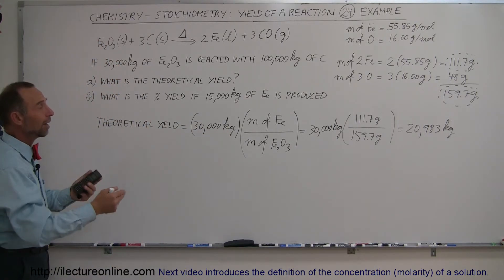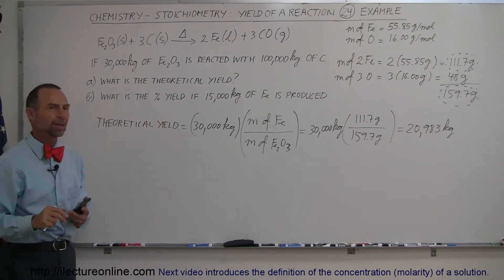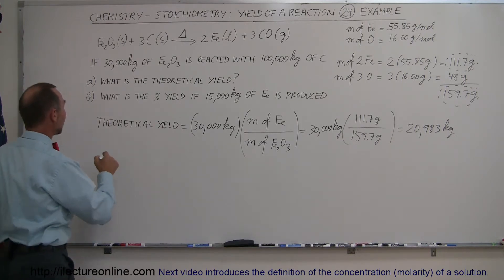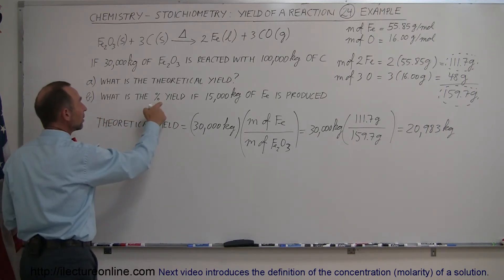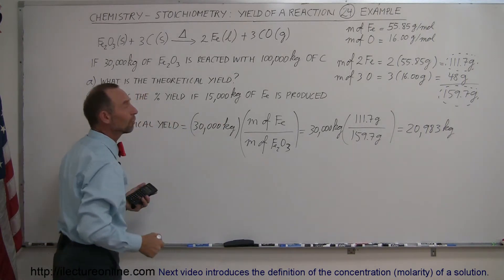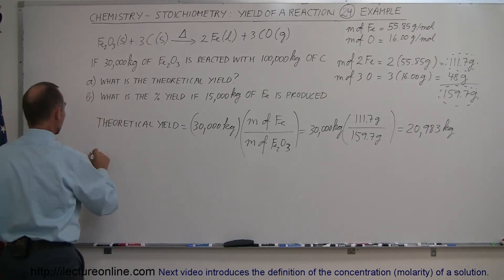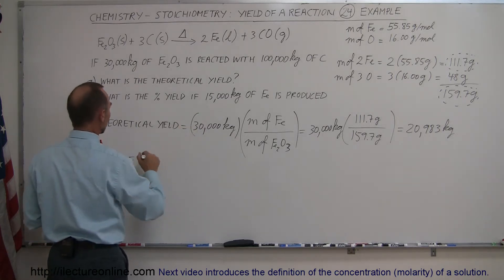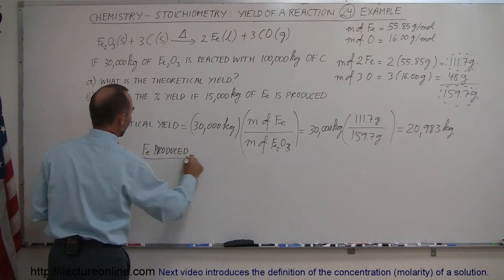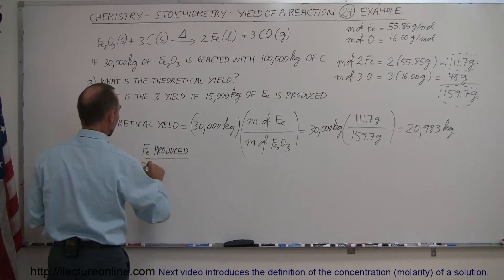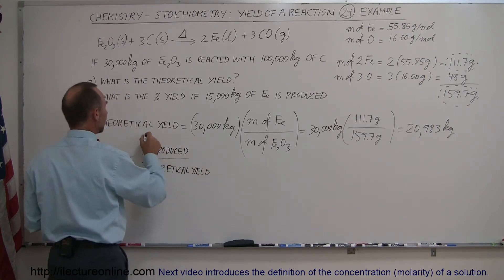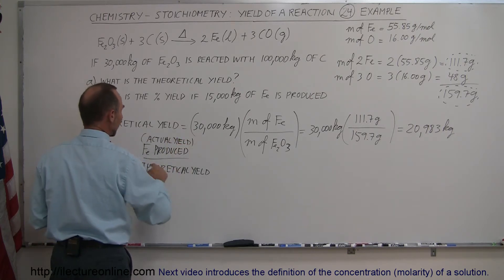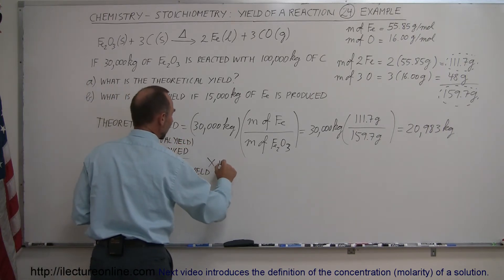Theoretically, if we extract all the iron, we would end up with 20,983 kg. But typically in one process like that you don't get all of it. So as an example: what would be the percent yield if only 15,000 kilograms of iron was produced? The percent yield equals the actual yield divided by the theoretical yield, multiplied by 100%.